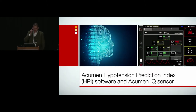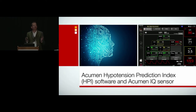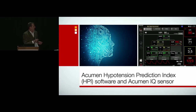There are many futures on the horizon: non-invasive monitoring, continuous ward-based monitoring. But one future that is not a future — it's here and it's now — is predicting hypotension before it actually occurs. And the algorithm comes from the Acumen Hypotension Prediction Index.